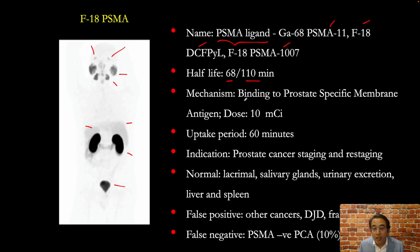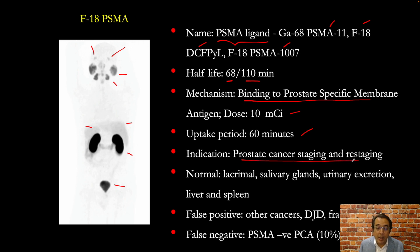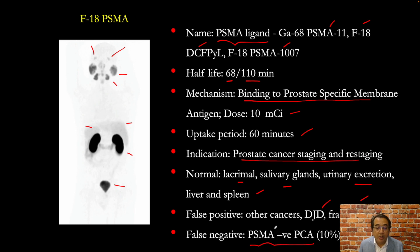The mechanism of uptake is binding to PSMA (prostate-specific membrane antigen). The dose is 10 millicuries; after injection we wait 60 minutes before image acquisition. This is used for prostate cancer staging and restaging. Physiologic uptake is seen in the lacrimal and salivary glands with urinary excretion and faint activity in the liver and spleen. False positives can occur with other cancers, since PSMA is not specific to prostate cancer, and also with degenerative change and fractures. False negatives occur in prostate cancers that don't express PSMA receptors, which account for about 10 percent of prostate cancers.